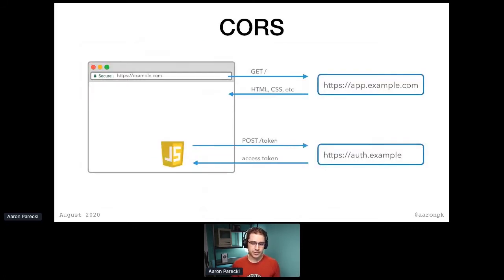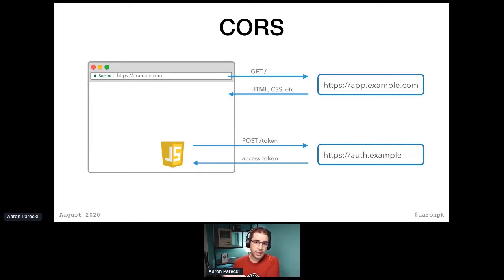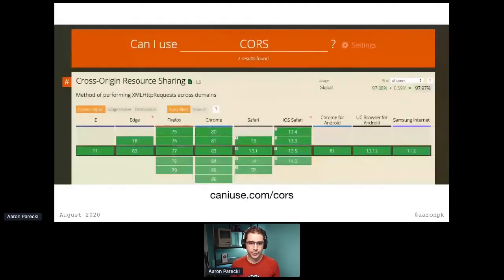The idea with CORS — cross-origin resource sharing — is that if you have an app running on one domain where the JavaScript is loaded from, and it needs to make requests to a different domain, that only works if the browser actually supports the headers that those websites can use to say this is allowed. Otherwise, the browsers will block those cross-origin requests. Because of the way the auth code flow works, it requires a POST request to where the tokens come from, which is very likely on a different domain. So that would only work if CORS was supported properly.